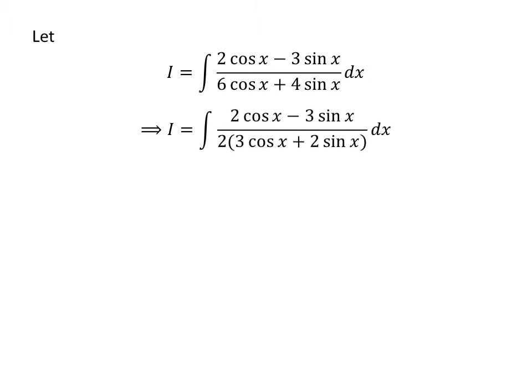As you can see, in the above denominator, 2 is the common factor. So after taking out the factor 2, we get i is equal to the integral of 2 times cosine of x minus 3 times sine of x upon 2 times (3 times cosine of x plus 2 times sine of x) with respect to x.